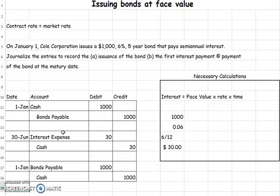Think of it like this: when we add the premium and discount element in the next video, it'll just be one more part to account for, and then you'll have bonds fully covered. Always think back to this simple version — issue it at face value: borrow the money, pay the interest, repay the bond. Let me know if you have any questions.